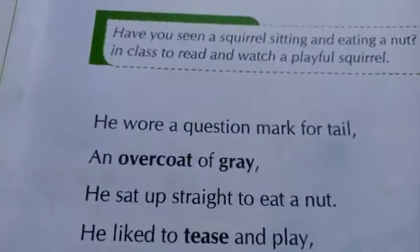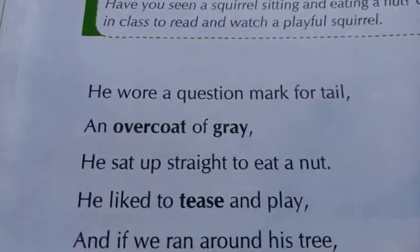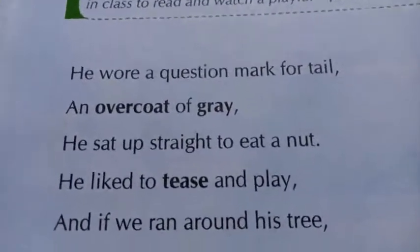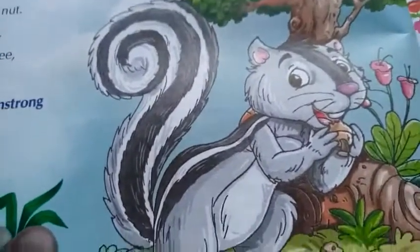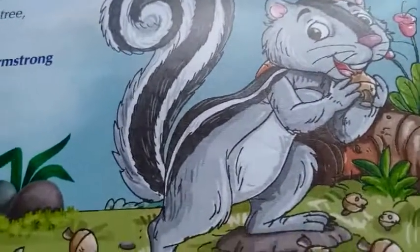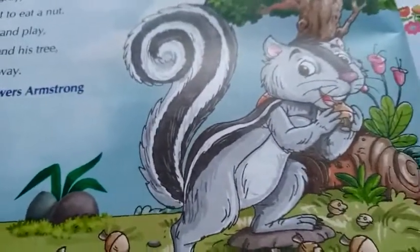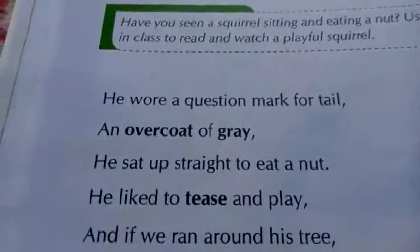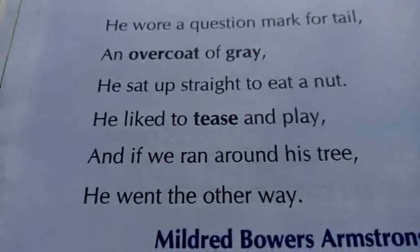Now let's take the lines — what the poem is trying to say about the squirrel. 'He wore a question mark for a tail' — no doubt, the squirrel's tail is just like a question mark. 'An overcoat of gray' — the skin, the lining of the skin, just looks like the design of a coat.